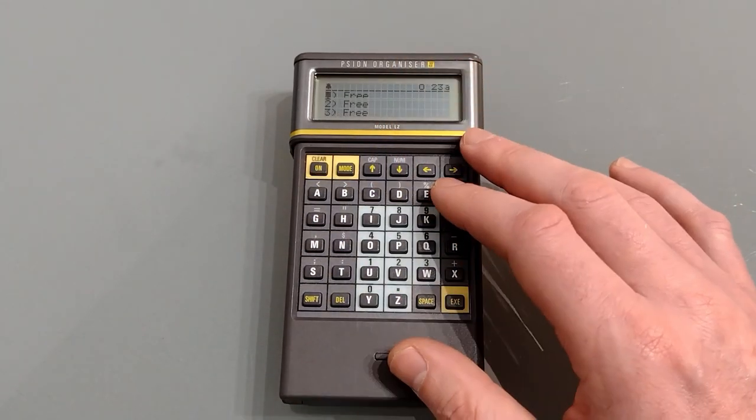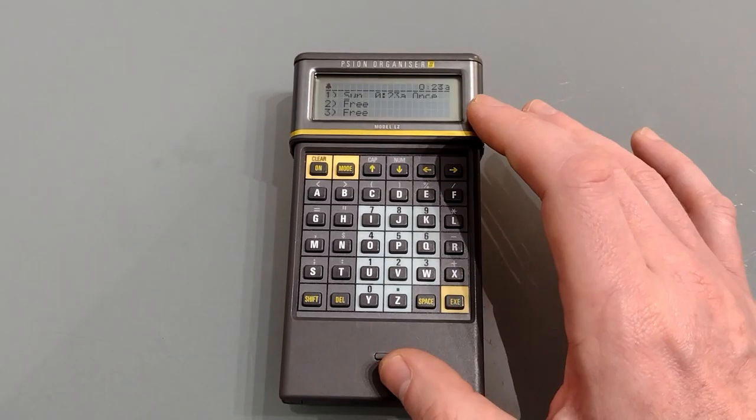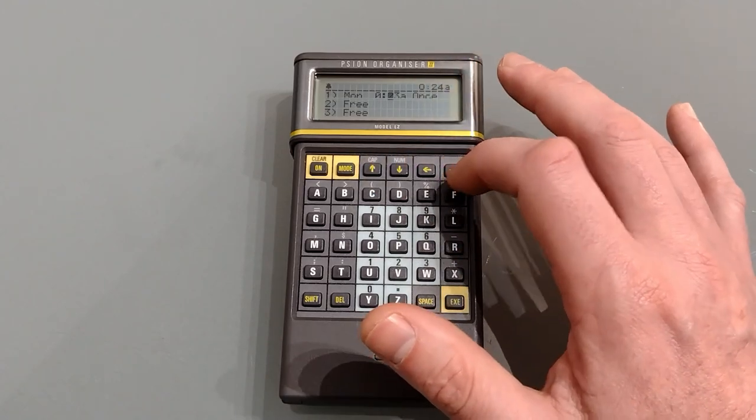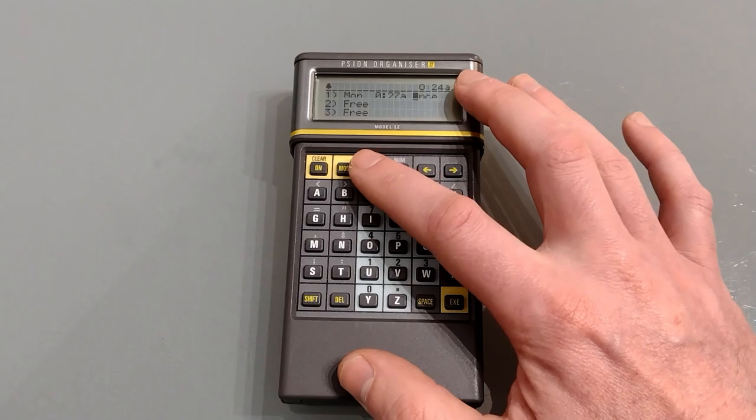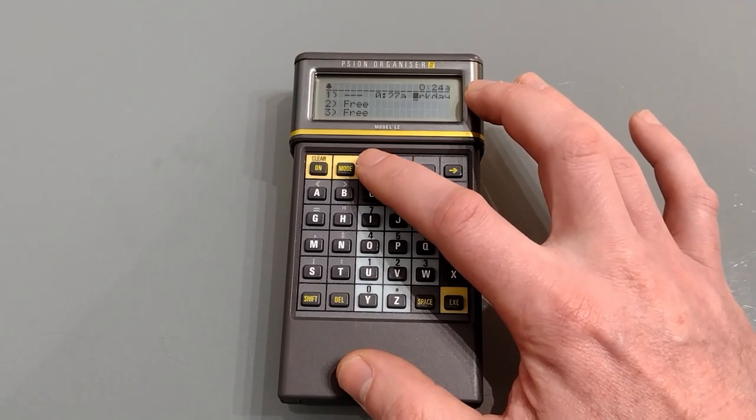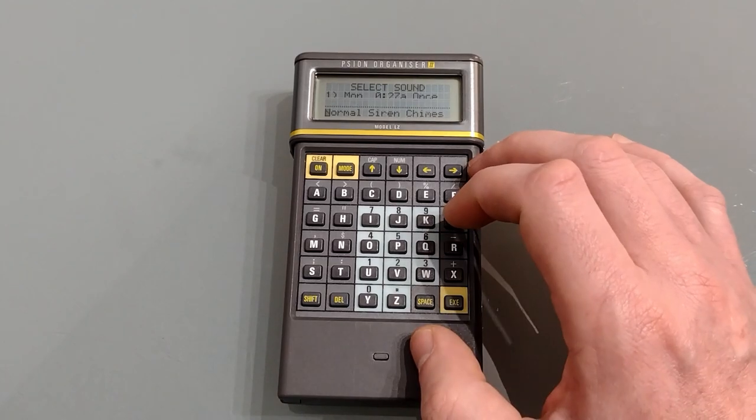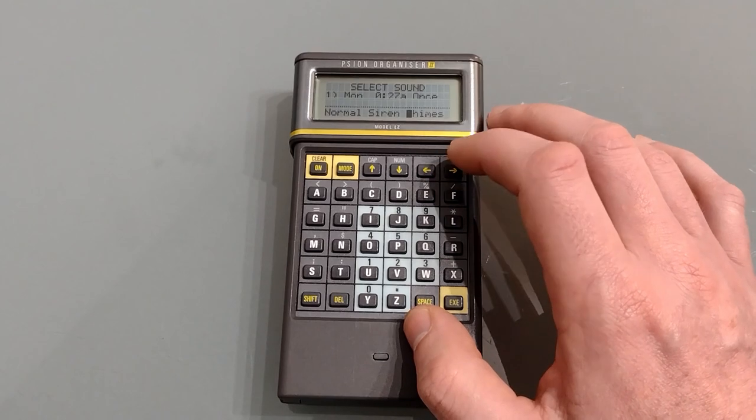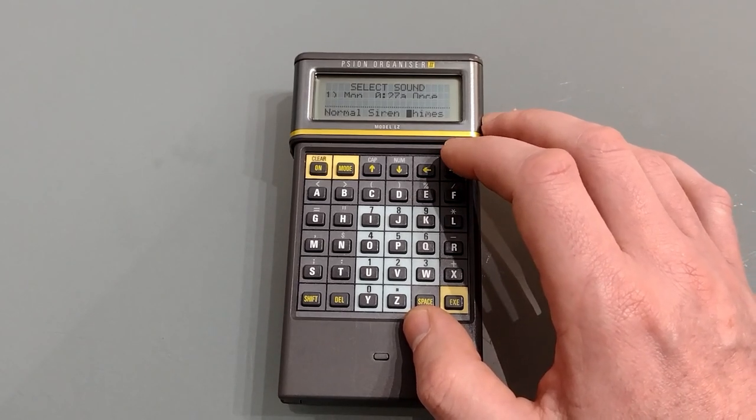Next up we've got alarm. We've got eight separate alarms that we can set. Simply select free slot, press execute, you then use the arrows to select the day and the time. Then you can choose whether you want it once, hourly, daily, work days, weekly and back to once. Once you hit execute it will set it and you can choose which output you want. You can have the normal, siren and chimes. All of them are quite squeaky thanks to the piezoelectric speaker.